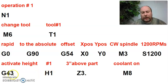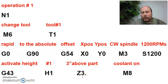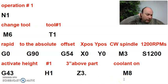So activate your height — the height of tool one. Remember, you're still rapid moving. You had an X, Y move up there, it went to that position. Now you've got a Z move — three inches above your part. And M8 means you turn your coolant on.